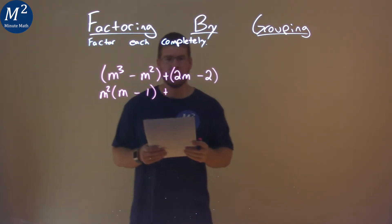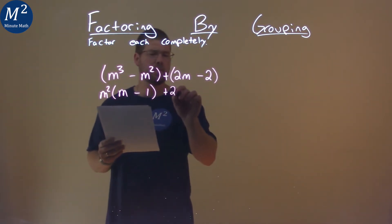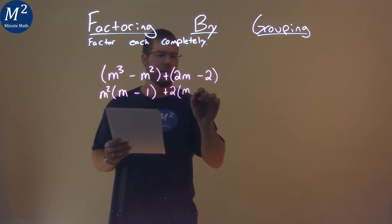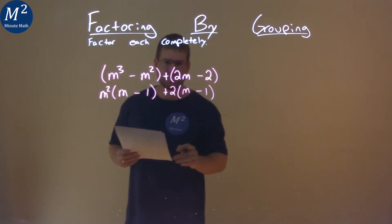I'm going to do the same thing with the second part, but I'm going to pull out a 2. By pulling out a 2, we have an m minus 1 left there.